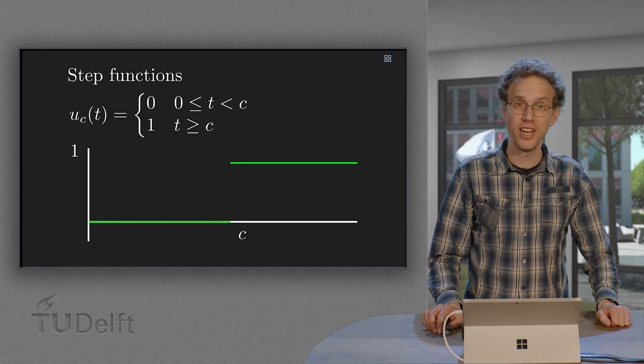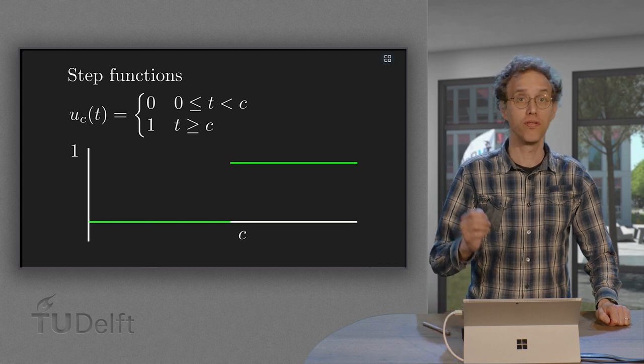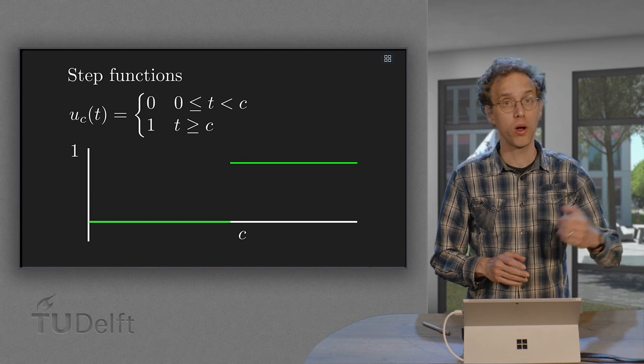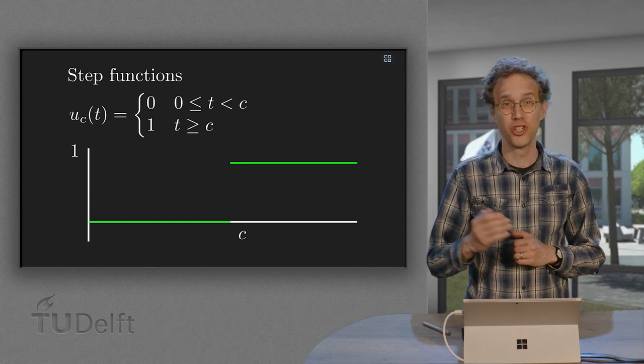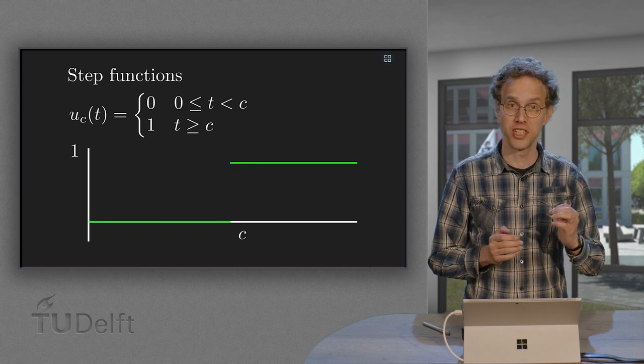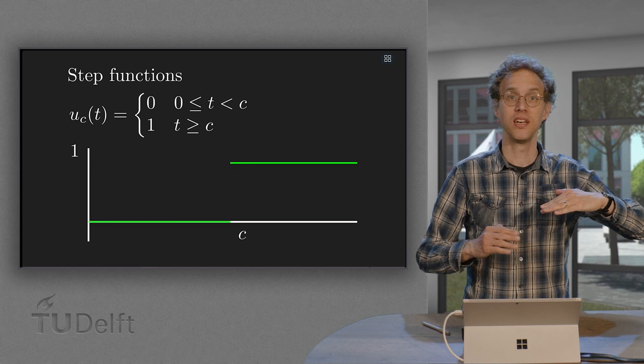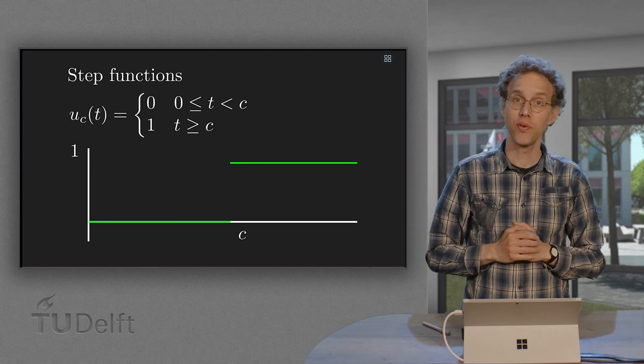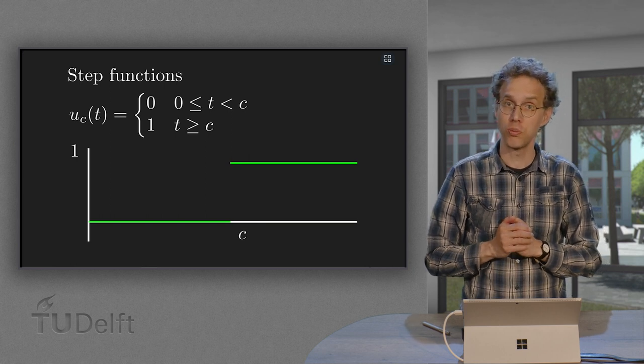Sometimes a sudden change occurs in a system. A valve is opened and water starts flowing, or a switch is turned and a current flows. For these sudden changes we can use step functions. There are 0 until time t and afterwards there are 1. In this video we will introduce these functions and we will start some first computations.